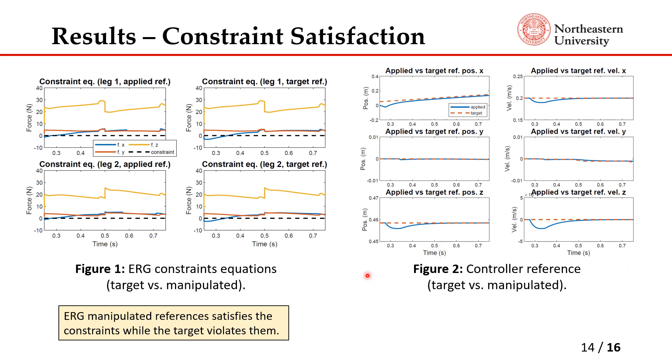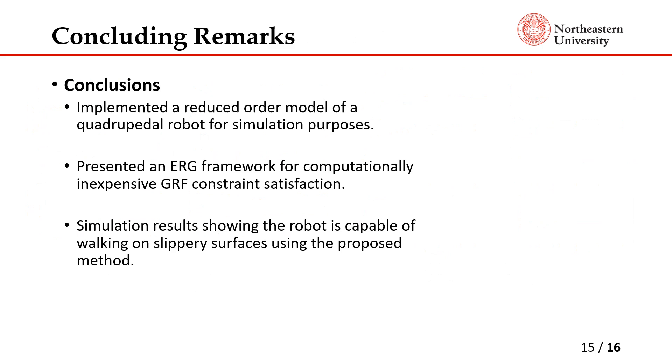In conclusion, we have derived a reduced order model for a quadrupedal robot where we implemented an explicit reference governor algorithm to manipulate the control references such that it satisfies a ground friction constraint such that it can walk on slippery surface stably. We have managed to run this algorithm at a speed of about 2000 hertz on MATLAB, so we believe that it's a sufficiently fast speed to be used in real time. For future work, we can try to implement this on the actual robot when it walks on a slippery surface. That's it for my presentation today. Thank you for listening and have a good day.